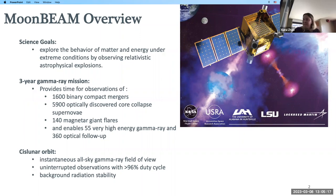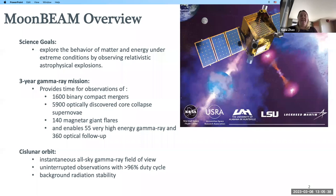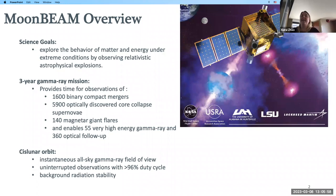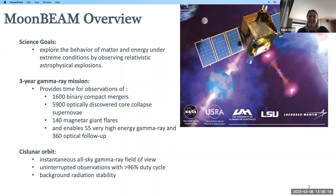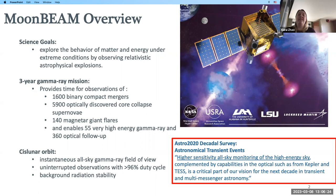MoonBeam is a gamma-ray instrument we want to put in cislunar orbit. Our science goals are to explore the behavior of matter and energy under extreme conditions by observing relativistic astrophysical explosions. We're planning a three-year gamma-ray mission providing observations of binary compact mergers, core-collapse supernovae, magnetar giant flares, and more. MoonBeam is distinct from current spacecraft because we want to be in cislunar orbit, giving us a view of the entire sky at all times with an uninterrupted duty cycle greater than 96% and stable background radiation.